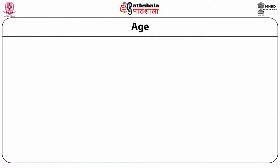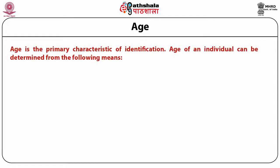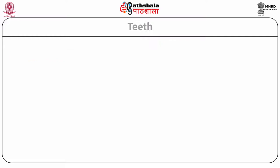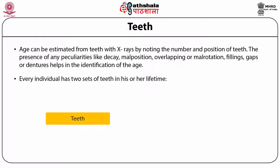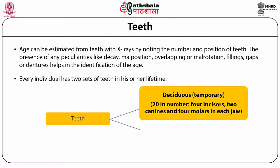Now, the next primary characteristic of identification is age. The age of an individual can be determined from the teeth, skeleton, ossification of bones, height and weight, and some minor signs. Age of a person can be estimated from teeth with X-rays by noting the number and position of teeth. The presence of peculiarities like decay, malposition, overlapping or malrotation, fillings, gaps or dentures help in identification of age. Every individual has two sets of teeth: deciduous or temporary teeth and permanent teeth.